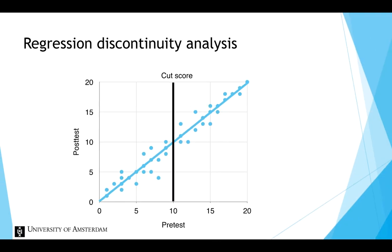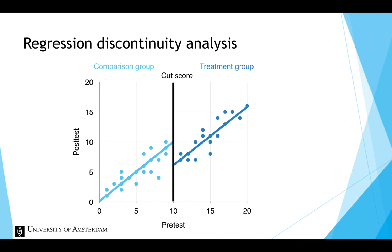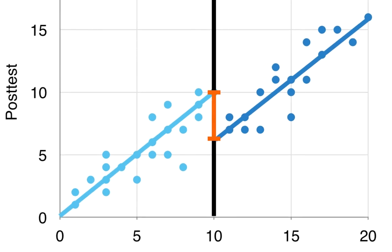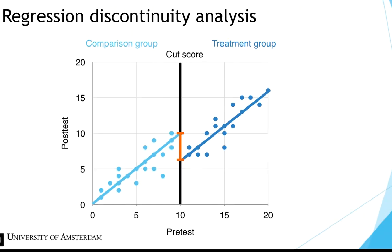Now suppose we give children to the right of the cut score the mindfulness intervention, so they are in the treatment group, and children below the cut score will be in the comparison group. This is what the graph could look like after giving the treatment — it is identical to the previous graph, except that all points to the right of the cut score are now decreased by 4 points on the posttest, indicating that receiving the mindfulness intervention reduces ADHD-related symptoms. This fall right at the cut score is a discontinuity in the regression line — that is why it is called regression discontinuity analysis.